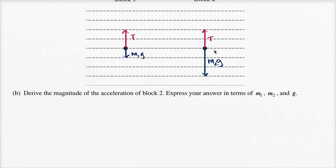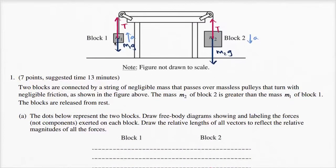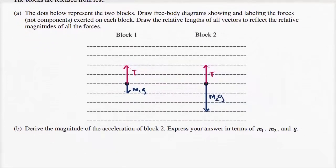Let's think about what the acceleration is first. We know it's going to accelerate downwards because the weight of block two is larger than the weight of block one. They're connected by a string, so we'll accelerate downwards on the right-hand side and upwards on the left-hand side. The weight of block two is larger than the upward tension, and the weight of block one is less than the tension. The magnitude of the acceleration is the same for both blocks because they're connected by that string.